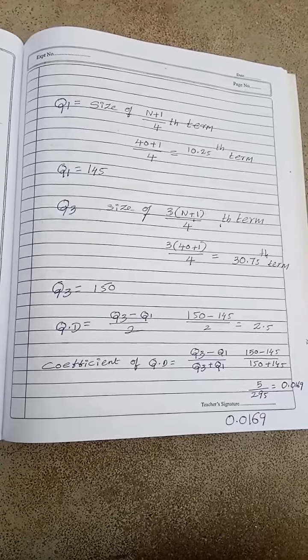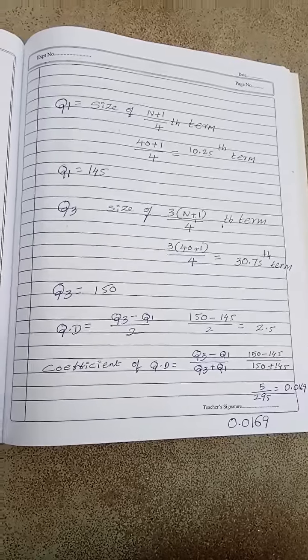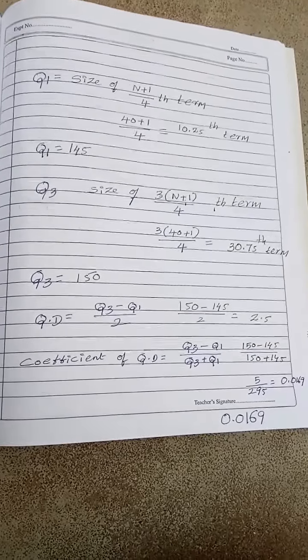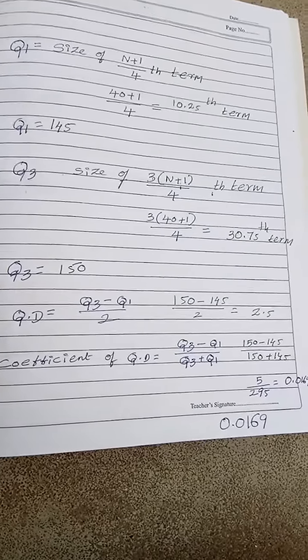Quartile deviation is equal to Q3 minus Q1 by 2. See, 150 minus 145 means 5 by 2, which is 2.5.